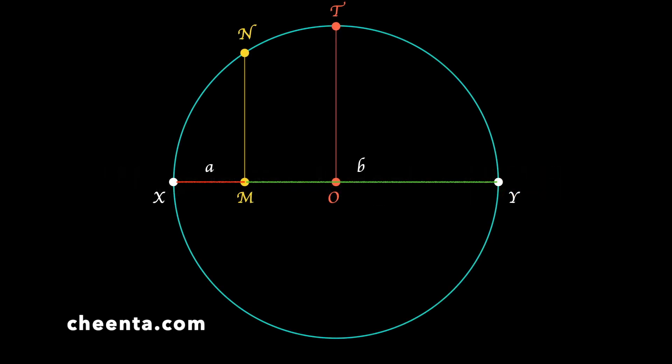Can you pause the video here and give it a try? Can you find geometrically the length of MN in terms of small a and small b? Put a comment in the description and tell me how you did it.